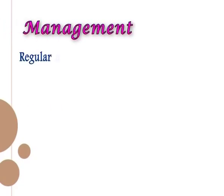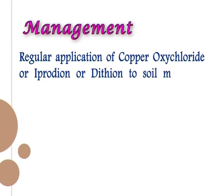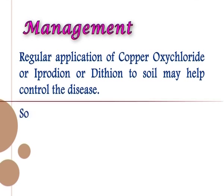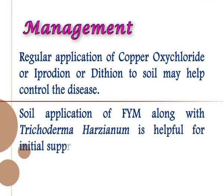Management of root rot: regular application of copper oxychloride, iprodione, or dithane to soil may help control the disease. Soil application of FOM along with Trichoderma harzianum is helpful for initial suppression of the disease.